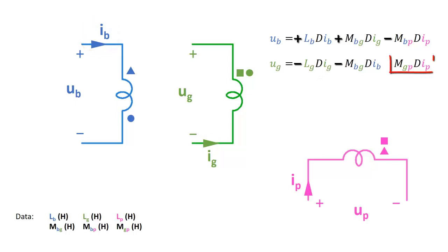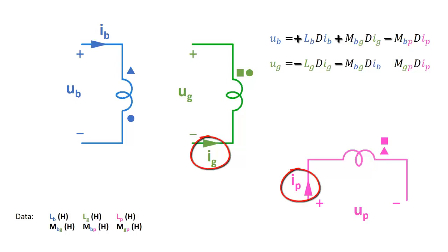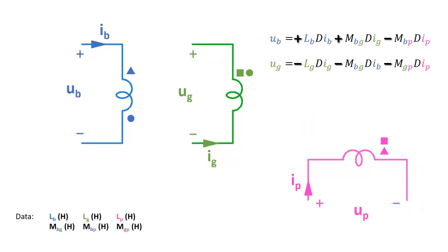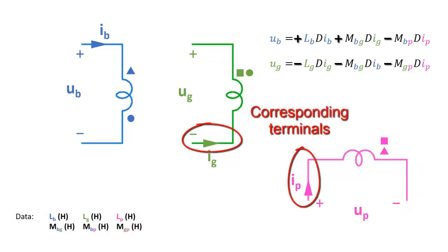The third term represents the mutual induction between the green coil and the pink coil. As you can see, both currents leave the coil by the square, so these currents are leaving or entering the coil by corresponding terminals. Remember that these terminals are corresponding terminals, but these ones are also corresponding terminals.